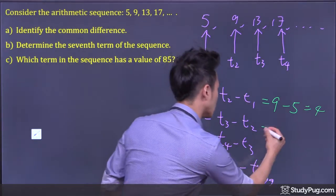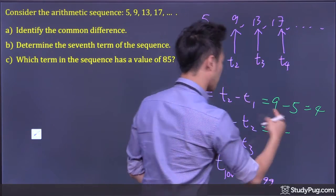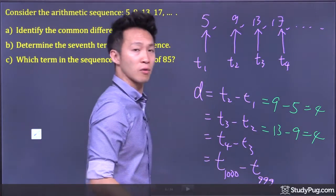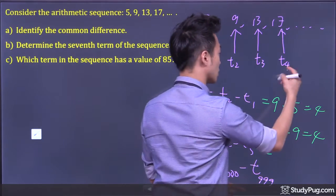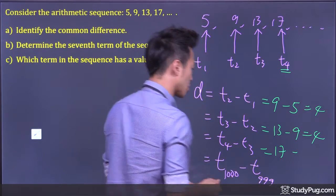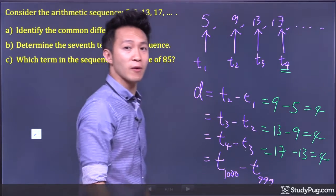Now, if we go term 3 minus term 2, we will have term 3 is 13 minus term 2 is 9, and we also get 4. Or now, if we go term 4 minus term 3, then we'll go term 4 is 17, term 3 is 13, and once again, we get 4.